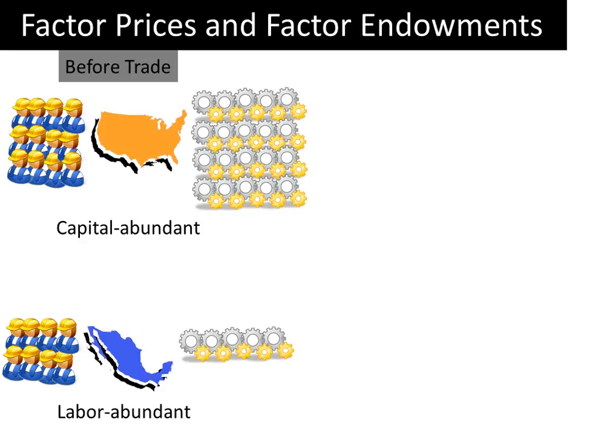Now this is not a coincidence. Usually, developed countries or industrialized countries such as the United States and countries of Western Europe are relatively capital abundant. And developing countries of Asia, Africa, and Latin America tend to be labor abundant.